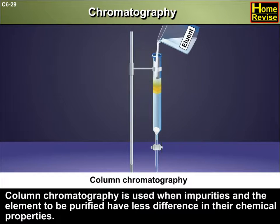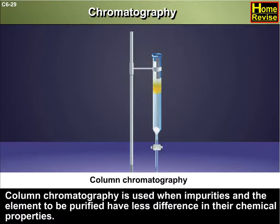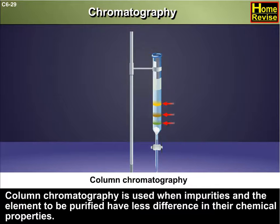Column chromatography is used when impurities and the element to be purified have little difference in their chemical properties. Column chromatography is easy and simple.